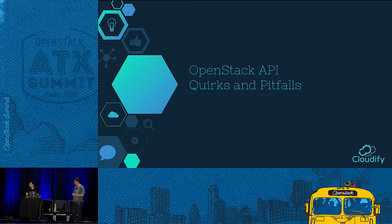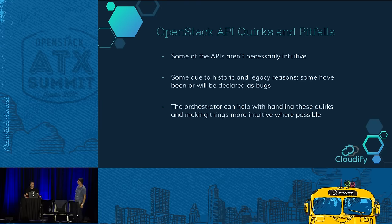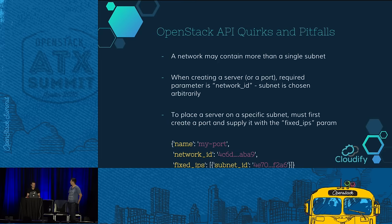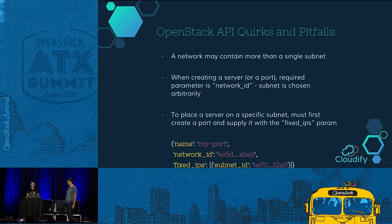Now for some quirks and pitfalls in the OpenStack API — not all APIs are as intuitive as you'd like, whether due to historic reasons, legacy issues, or bugs. The first one: a network in OpenStack can have more than a single subnet. When you create a server or a port, you only define which network it sits on, not the subnet — the subnet is chosen arbitrarily. If you want to place a server on a specific subnet, you create a port and use the fixed_ips parameter to define the subnet, then connect the server to that port.